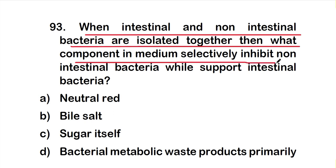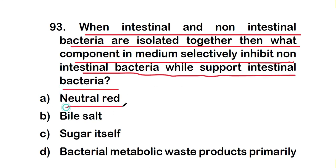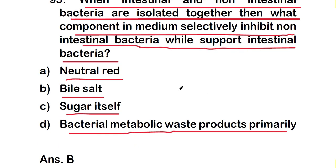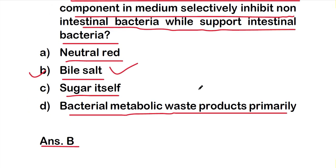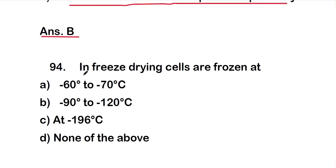Question number 93: When intestinal and non-intestinal bacteria are isolated together, what component in the medium selectively inhibits non-intestinal bacteria while supporting intestinal bacteria? Option A: neutral red, option B: bile salts, option C: sugar itself, option D: bacterial metabolic products. The right answer is option B — bile salts selectively inhibit the growth of gram-positive non-intestinal bacteria, allowing gram-negative intestinal bacteria to grow.